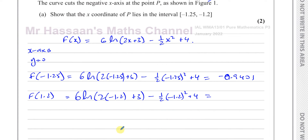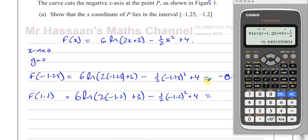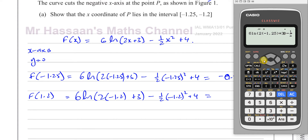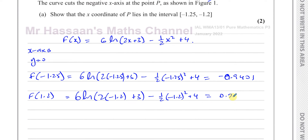And when I put f(-1.2) in here, it should give me a positive value because that's to the right of the root. And it is positive: 0.2150. So we can see there is a change of sign in the interval.